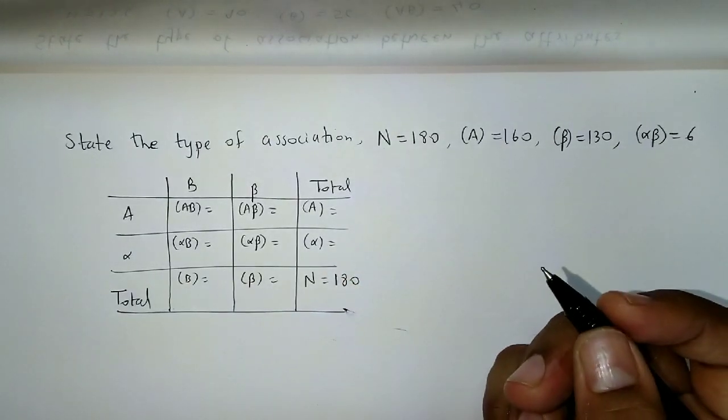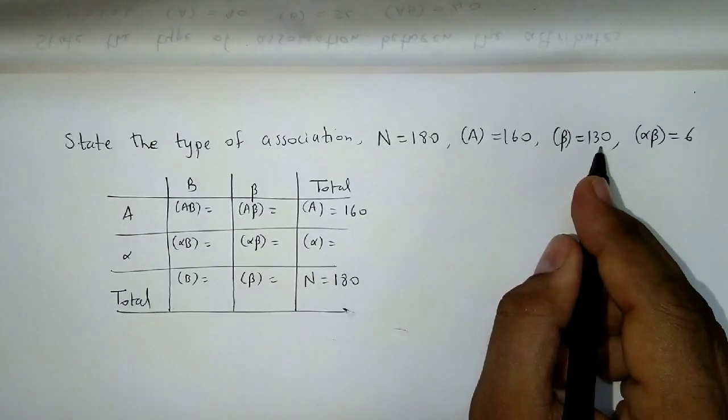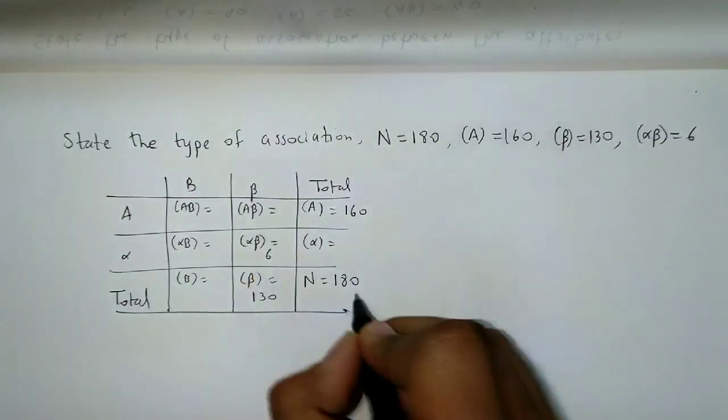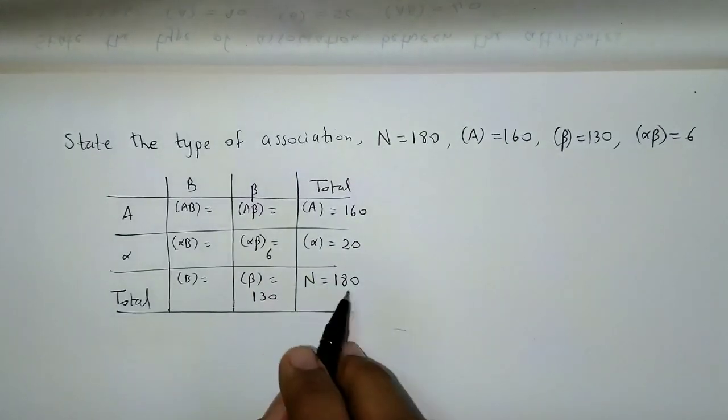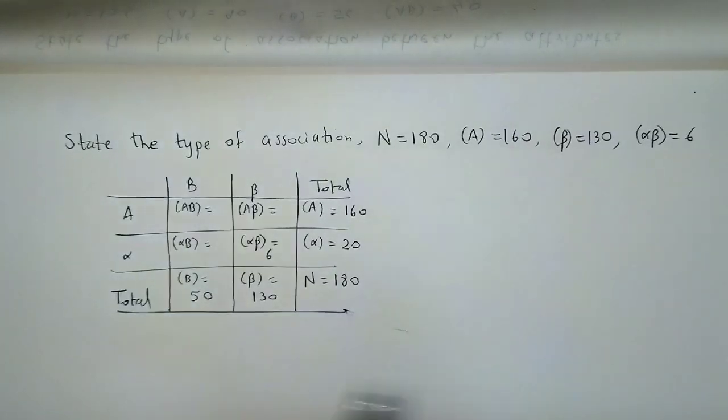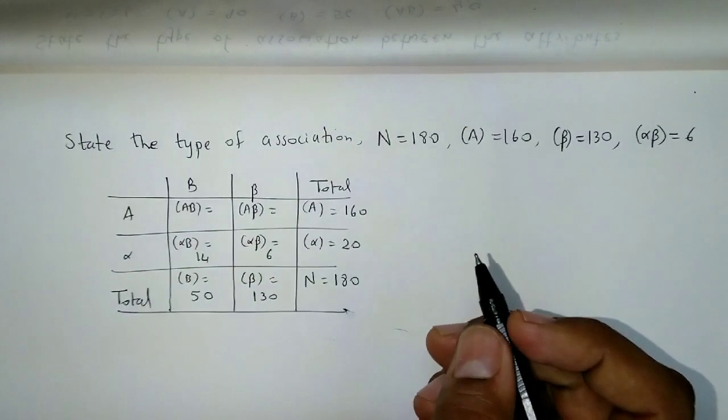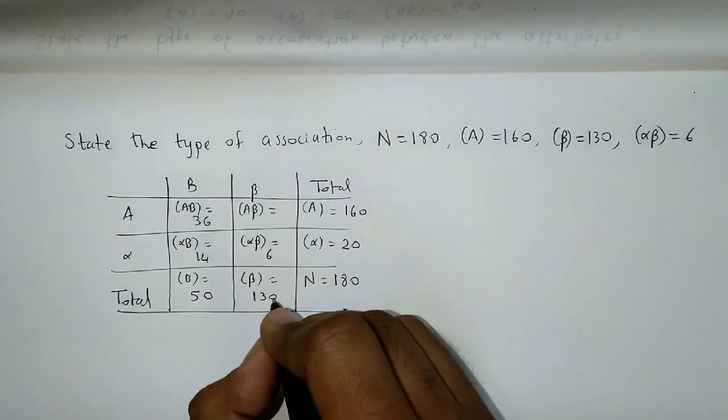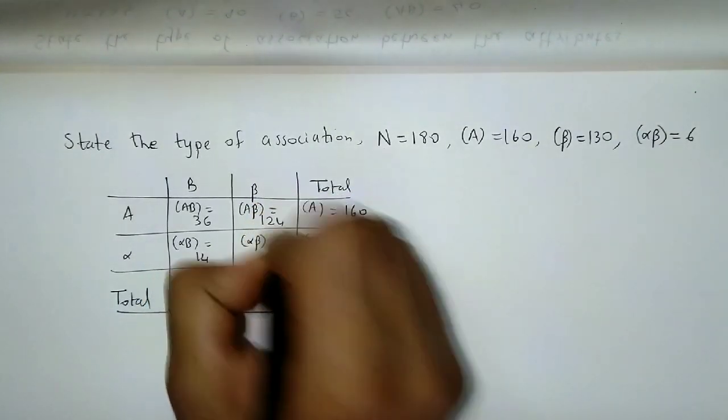Here you have 180. Then A frequency is 160. Beta is 130. And alpha beta is 6. So, 180 minus 160, this frequency is 20. 180 less 130, so beta frequency is 50. 20 less 6, that becomes 14. Then 50 less 14 becomes 36. And 130 less 6, if you subtract 6, this becomes 124.